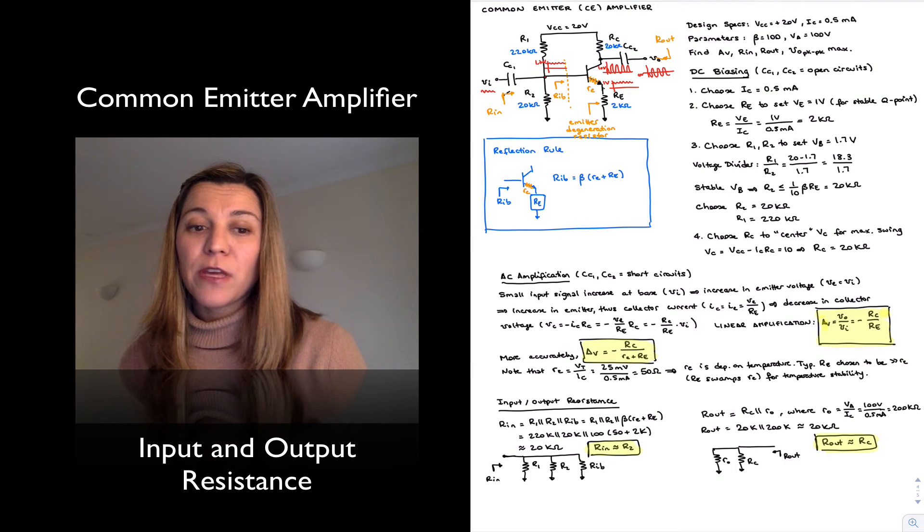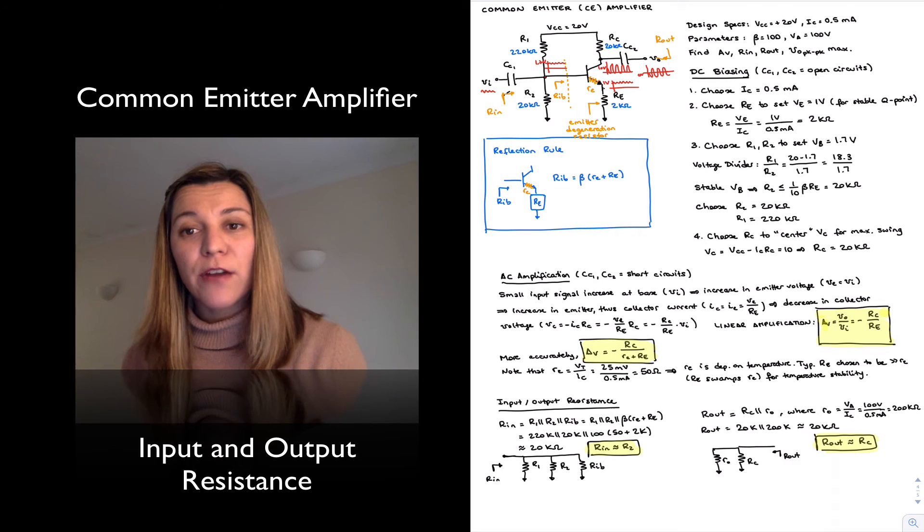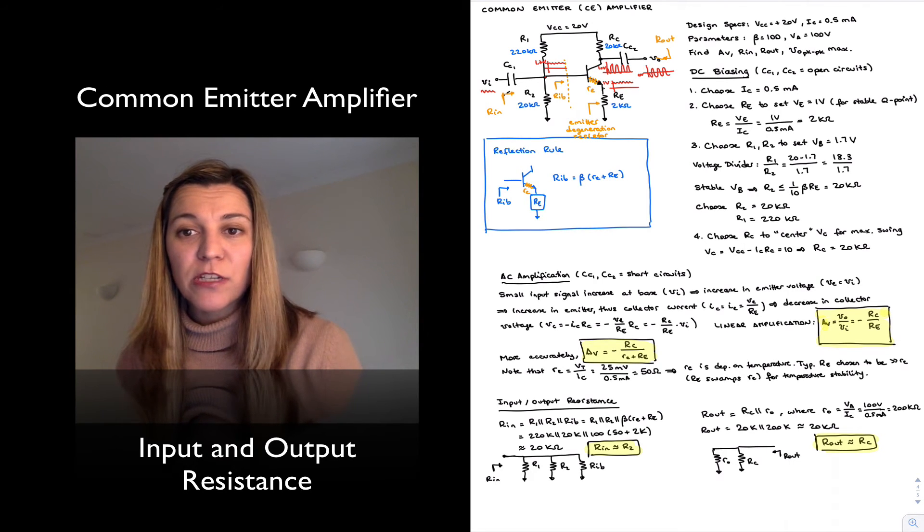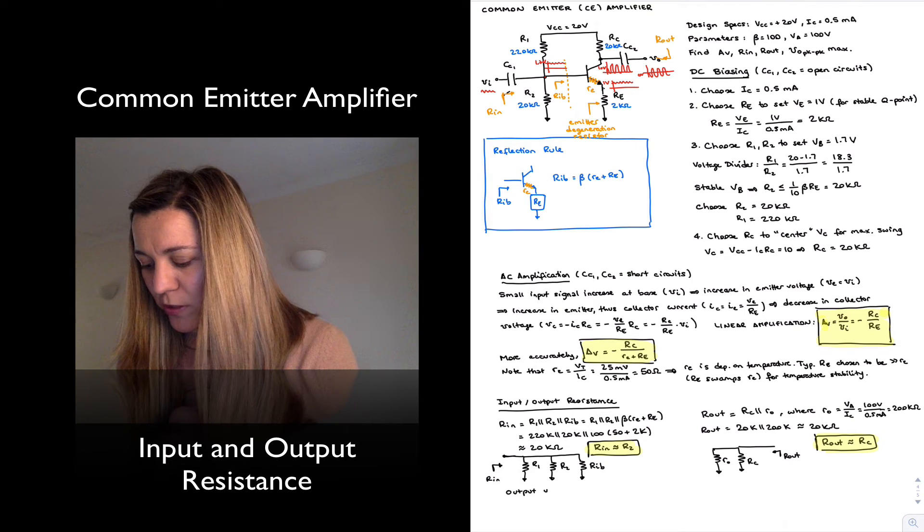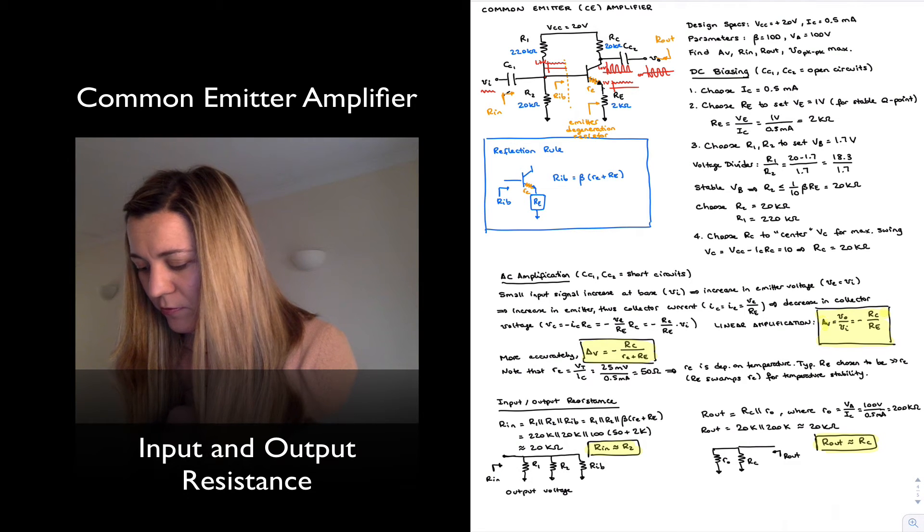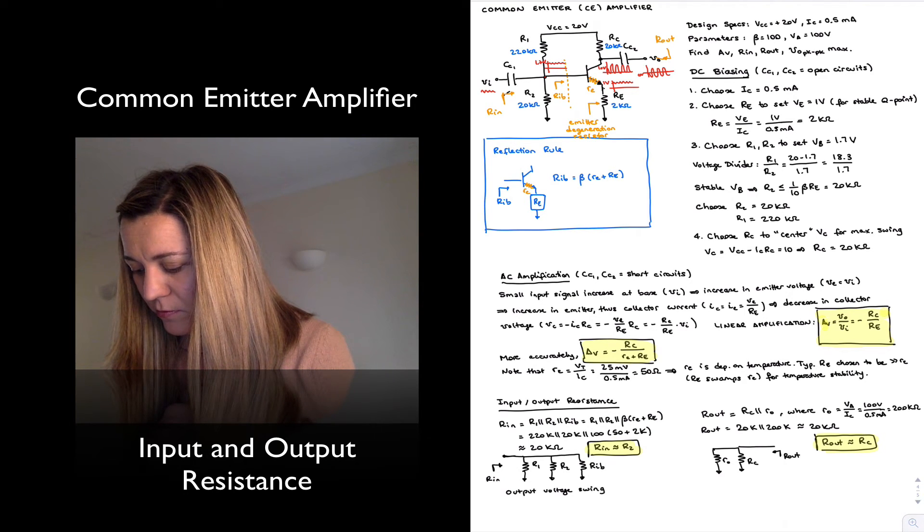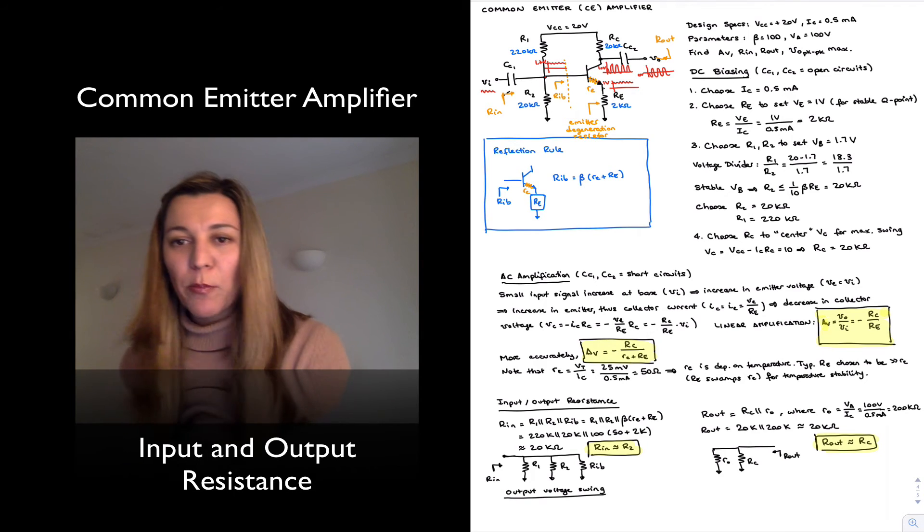Again, for a linear amplifier, we want the output to be an amplified version of the input, and so it should have the same shape as the input. If we run into cutoff or saturation, we're going to start seeing clipping effects in our output signal, which is an undesirable non-linear effect, and so we typically will want to calculate what is our maximum output voltage swing.